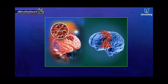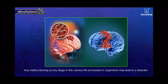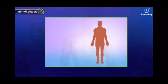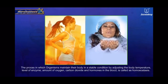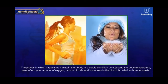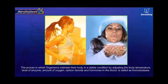Any malfunctioning at any stage in the various life processes in organisms may lead to a disorder. For proper growth and development, the various tissue systems and organ systems must function in perfect coordination and maintain a constant internal condition in response to changes in the external environment. Organisms maintain their body in a stable condition by adjusting body temperature, levels of enzymes, amounts of oxygen, carbon dioxide, and hormones in the blood. This process is called homeostasis.